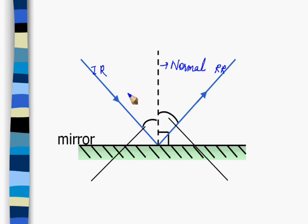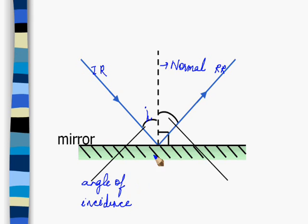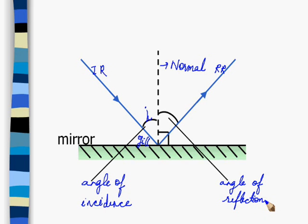The angle between the incident ray and the normal is called the angle of incidence, denoted by small letter i. We also have the glance angle of incidence, which is the angle between the incident ray and the reflective surface, denoted as GI. Similarly, the angle between the reflected ray and the normal is the angle of reflection, denoted by small letter r. The glance angle of reflection is the angle between the reflected ray and the reflective surface, denoted as GR.